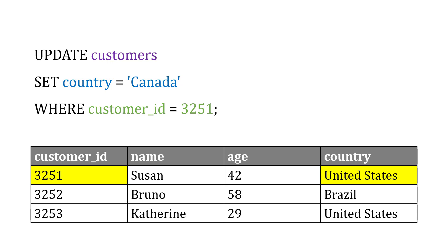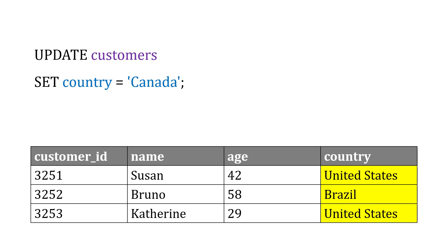That's just going to change the country for that one customer. Now if we adjust the WHERE clause to say WHERE country equals United States, any row referencing the United States will be changed to Canada. And if we remove the WHERE clause entirely, it's going to change everything in the country field to Canada.